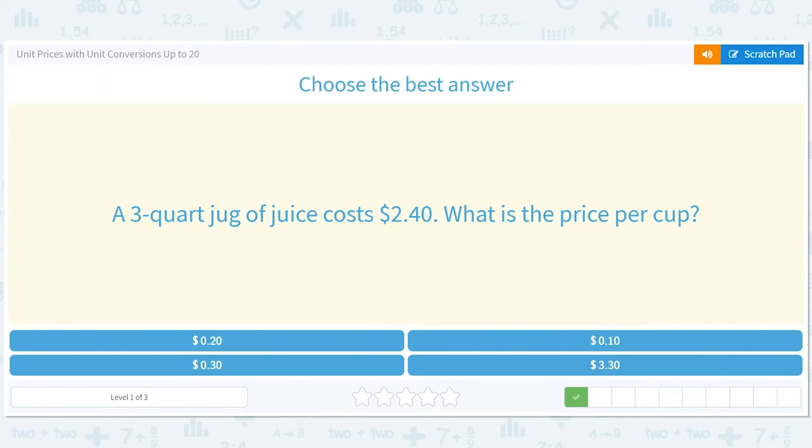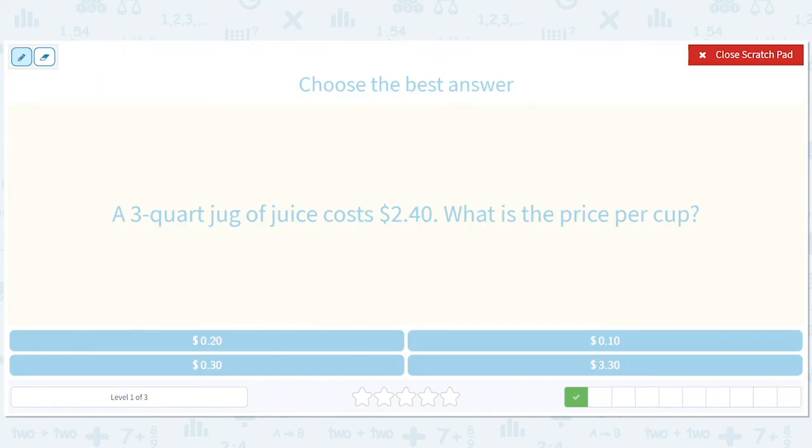A three quart jug of juice costs $2.40. What is the price per cup? Let's do this a slightly different way. So $2.40 divided by three. So what's one quart? One quart is 80 cents. Well how many cups are there in a quart? There are four cups in a quart so we have to divide 80 cents by four and we'll get 20 cents.